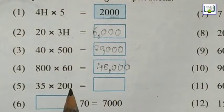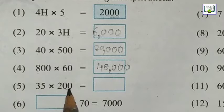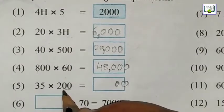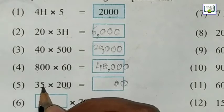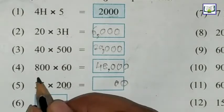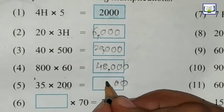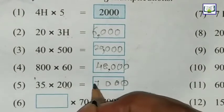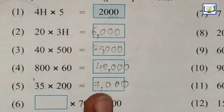Now 35 into 200. 200 has 2 zeros, so first write 0, 0. Now we multiply 2, first by what? By 5. 2 fives are 10. 1 carry, 0 here first. 2 threes are 6, 6 plus 1 is 7. Answer is 7000.